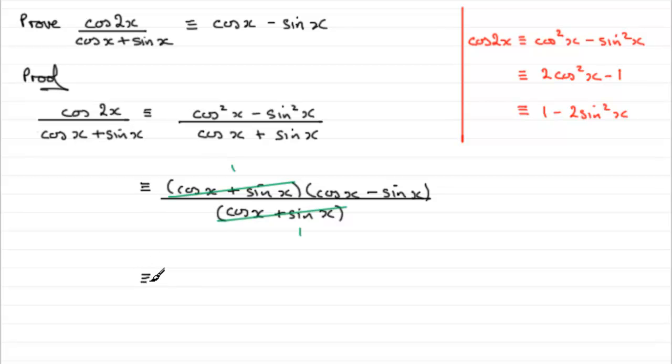What does that leave us with? Well, it gives us cosx minus sinx, what we needed to end up with. And there's our proof for part one.